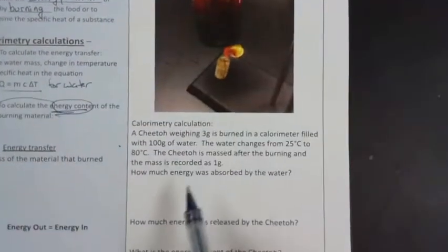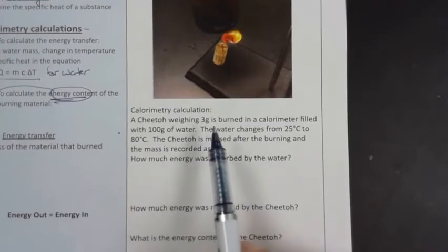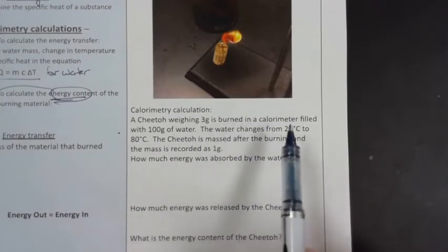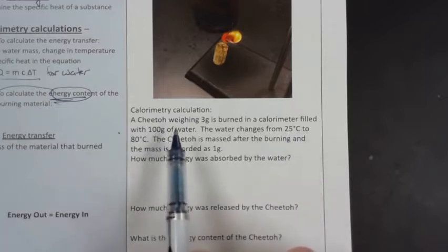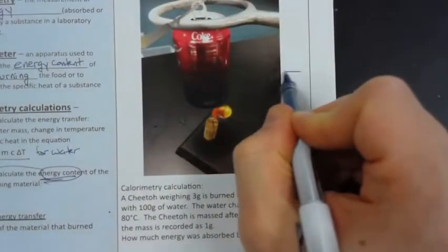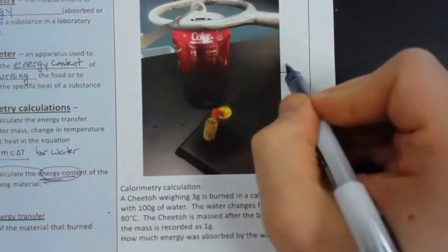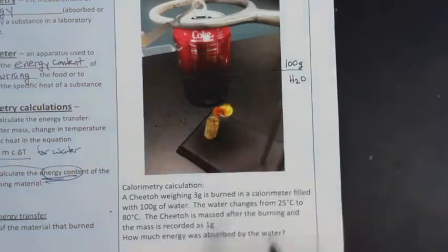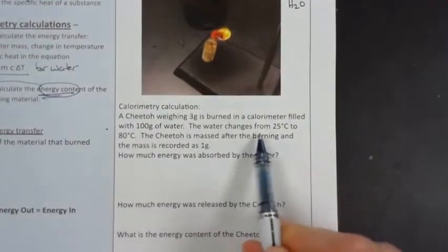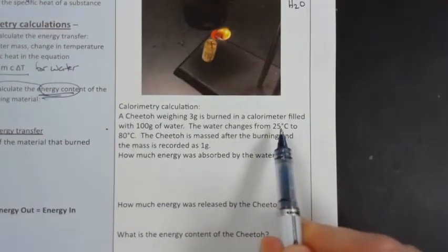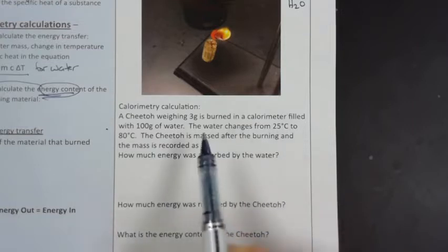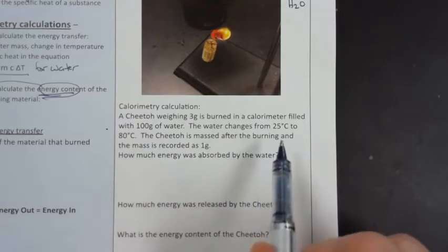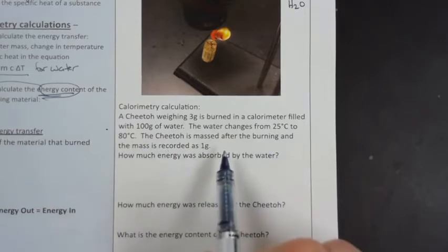We've got a Cheeto weighing three grams and it's burned in a calorimeter experiment filled with 100 grams of water. So in the can here, we've got 100 grams of water. The water started at a temperature of 25 degrees and warmed up from that Cheeto being burned to 80 degrees. The Cheeto is then massed after the burning and the mass is recorded as one gram.